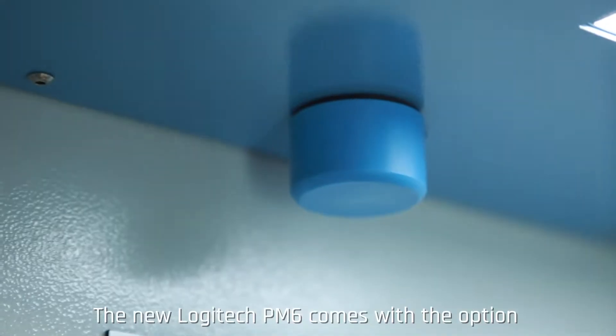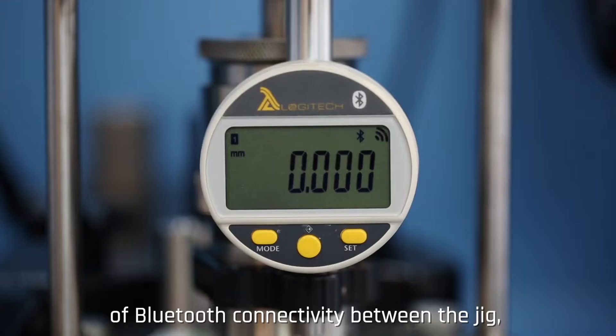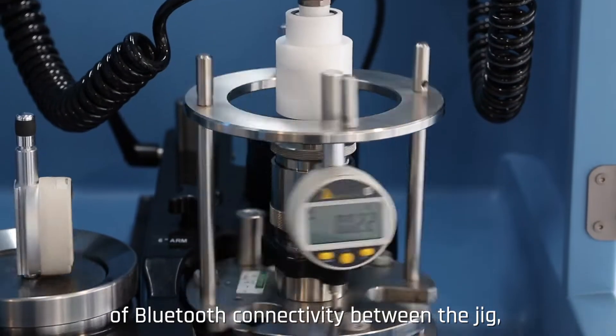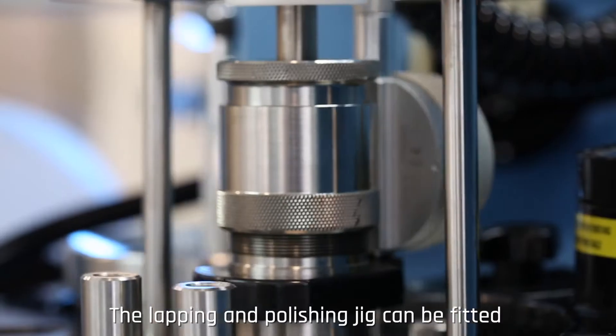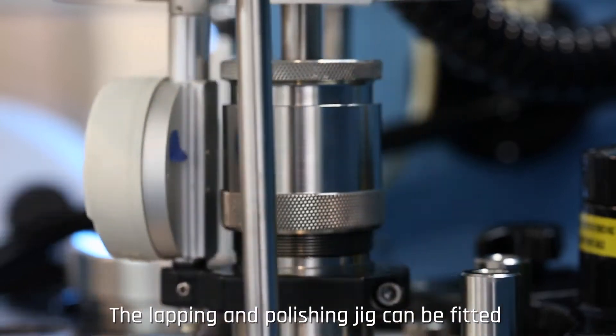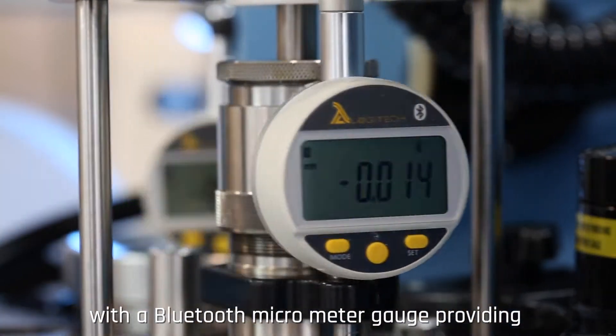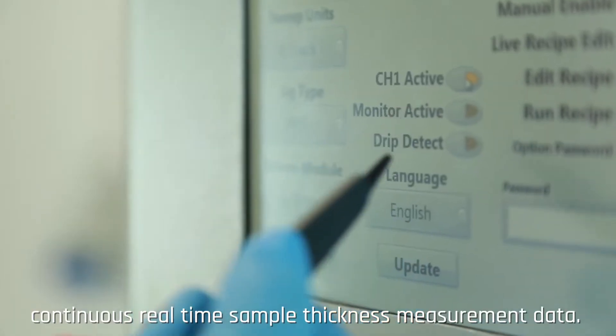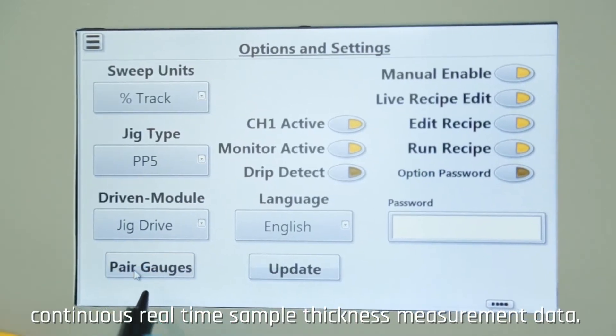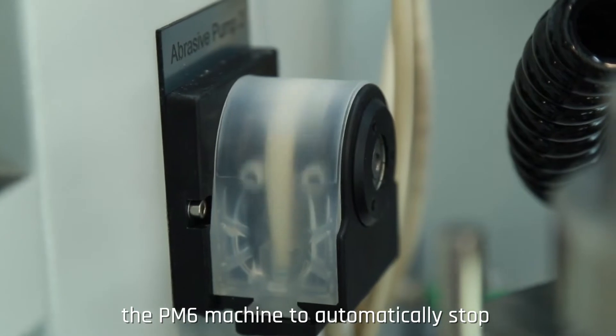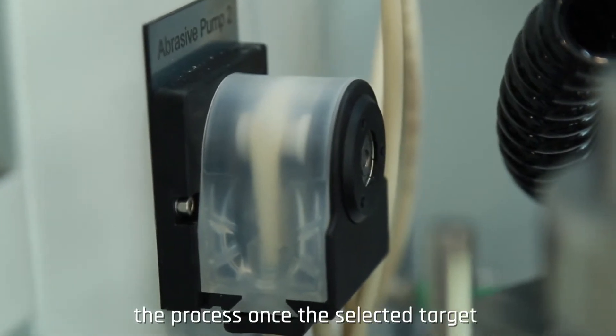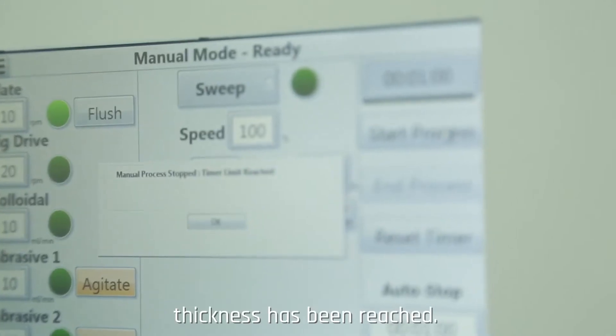The new Logitech PM6 comes with the option of Bluetooth connectivity between the jig, flatness monitor and the graphical user interface. The lapping and polishing jig can be fitted with a Bluetooth micrometer gauge providing continuous real-time sample thickness measurement data. This thickness data can be used by the PM6 machine to automatically stop the process once the selected target thickness has been reached.